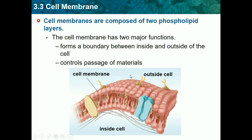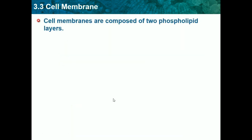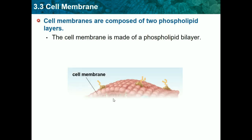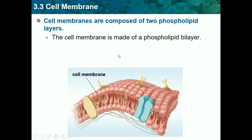The polar heads are on the outside and the non-polar tails are on the inside. The cell membrane is made of a phospholipid bilayer — bi meaning two layers. We need to know that.